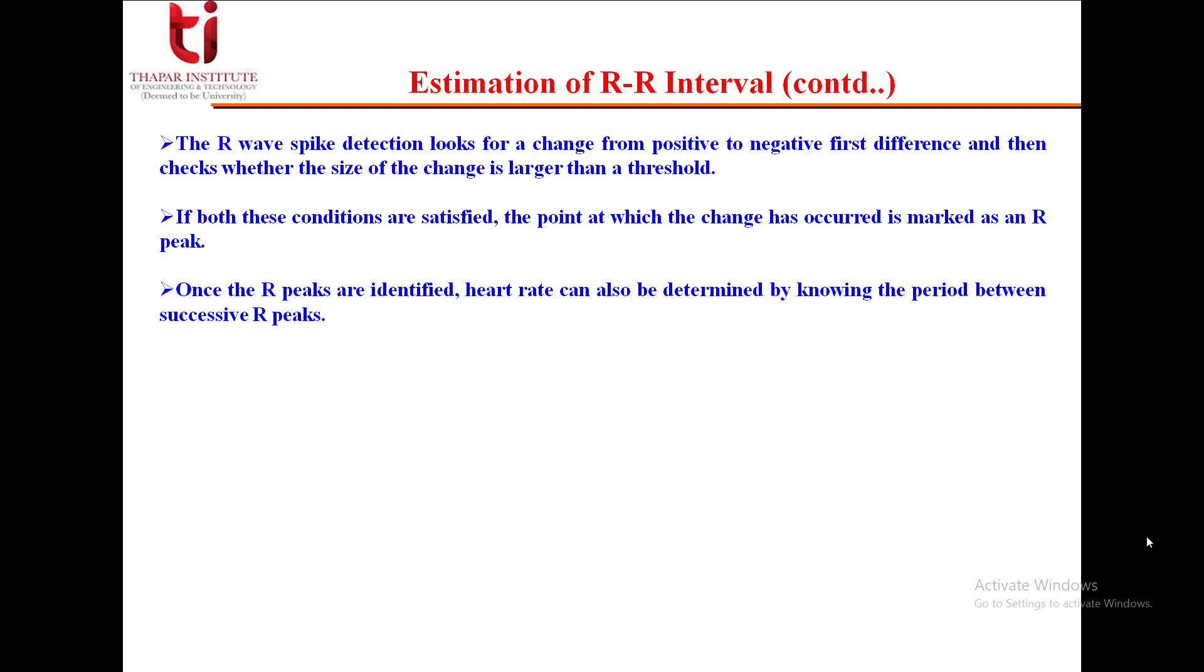Once the R peaks are identified, heart rate can also be determined by knowing the period between successive R peaks. For example, if the peaks are detected at intervals of 51 and 136 in an ECG signal sampled 100 times per second, then we can calculate the heart rate in beats per minute as 100 divided by the difference of 136 and 51, times 60, which gives us 74 beats per minute.